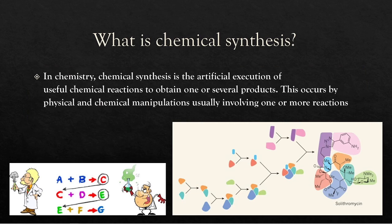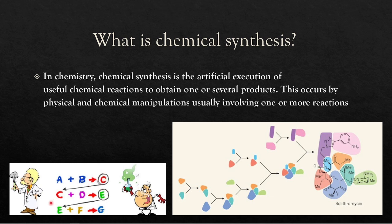Chemical synthesis is the artificial execution of useful chemical reactions to attain one or several products — a series of reactions a chemist goes through to create a final product. Sometimes it's a single reaction: A plus B equals C, you're done. Other times you might need multiple steps, like getting C first, then using C plus D to get E, then E plus F to get G, adding together to create a giant molecule.